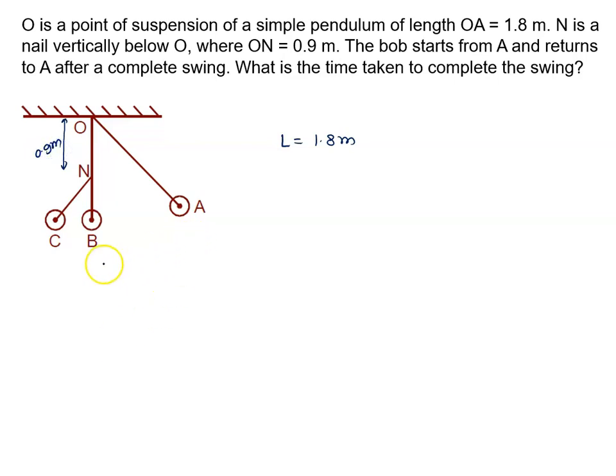The bob starts from A and returns to A after a complete swing. What is the time taken to complete the swing? There are a couple of parts: first A to B, then B to C, C to B, and B to A. This is the complete one oscillation. Now what's the difference? A to B and B to A versus B to C and C to B.